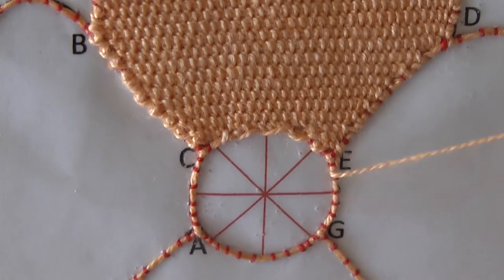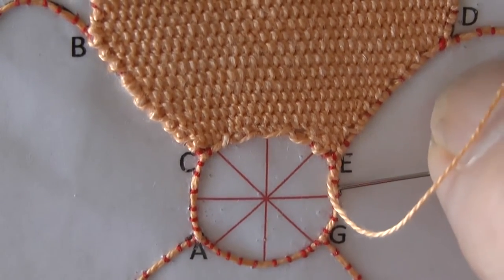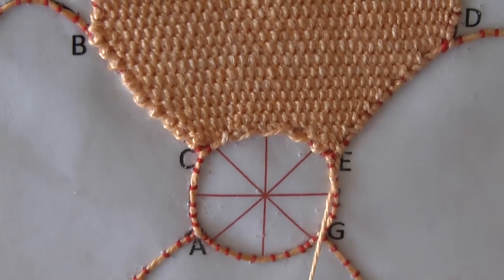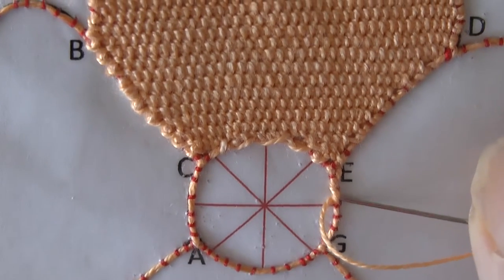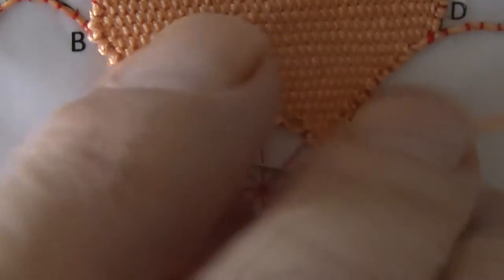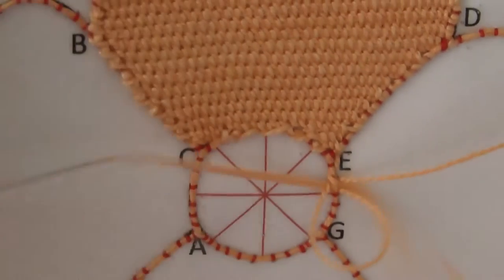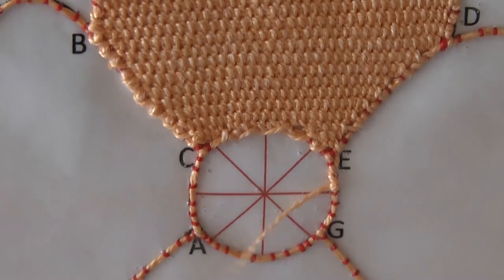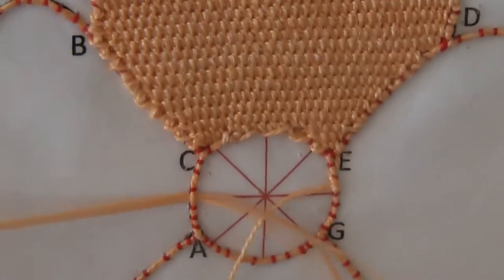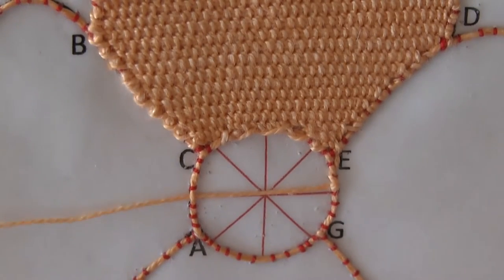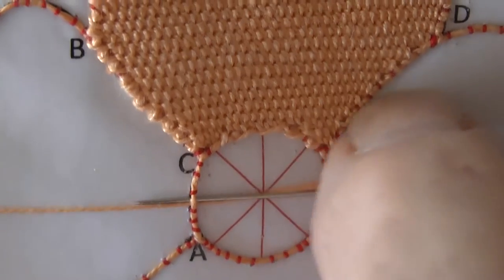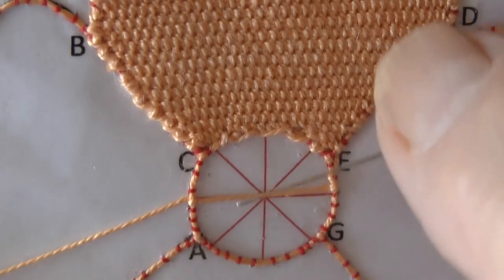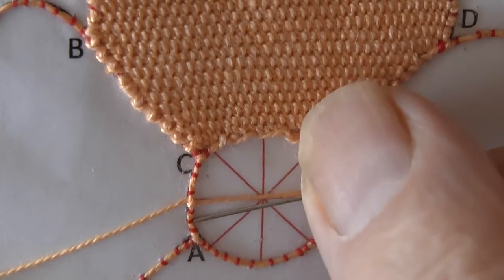Then whip it round again and take it across to the other side. Put a double loop in there, then whip down to A around the outside of the circle.